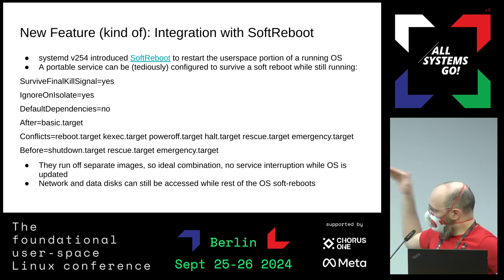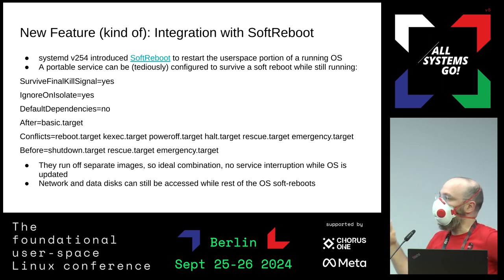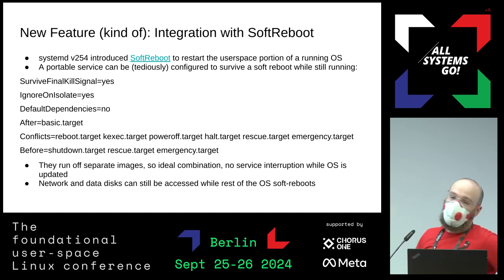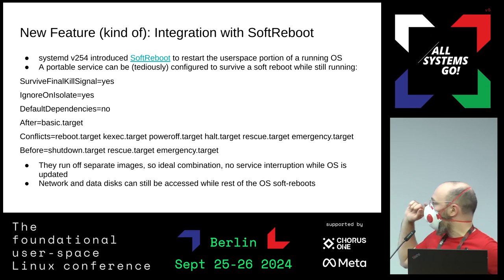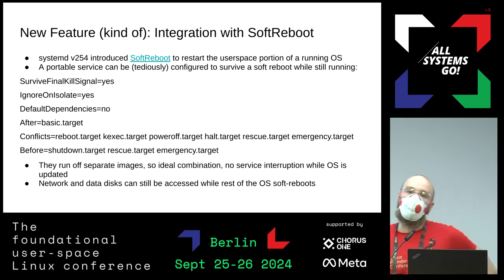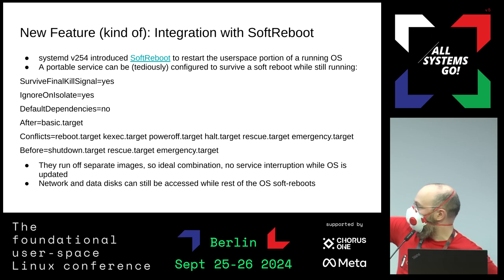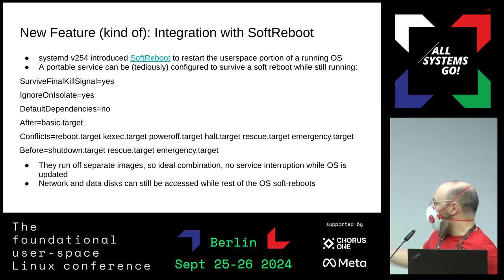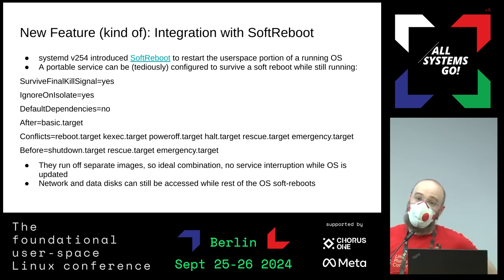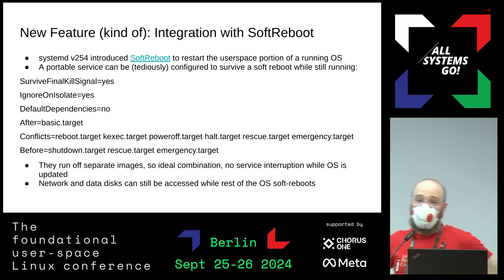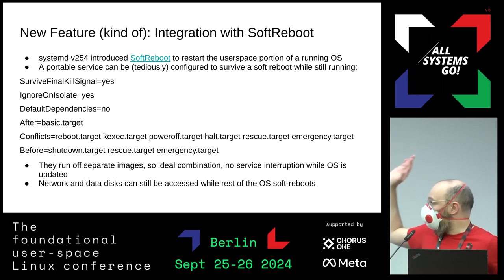A related feature: soft reboot. We developed it explicitly for the portable service case. Since systemd 254, you can restart the userspace portion of your OS without restarting the kernel — quite fast. Because a portable service by definition runs on a separate image rather than your rootfs, we can keep it running through a soft reboot. With a short configuration in your service file, if your rootfs is updated with a soft reboot, the service keeps running with no interruption whatsoever. Network, data storage — all still available. Your service just continues doing whatever it needs while the OS is updated.